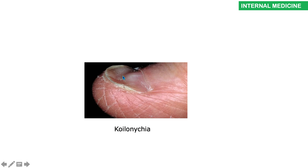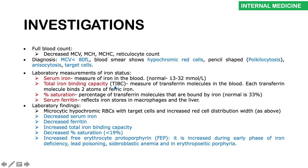This is what koilonychia looks like — spoon-shaped nails. In terms of investigations, do a full blood count. The MCV will be low (less than 80), and the MCH and MCHC will also be low, indicating small (microcytic) and pale (hypochromic) cells. You may see pencil-shaped cells and poikilocytosis (different shaped red blood cells), codocytes or target cells, and anisocytosis (different sizes and shapes). Iron studies will point you specifically toward iron deficiency.